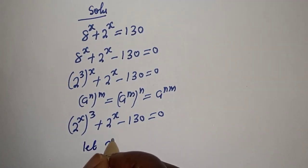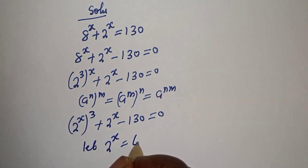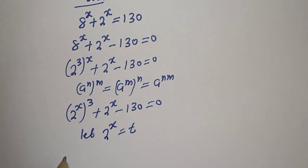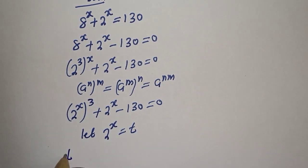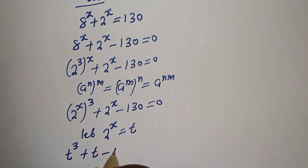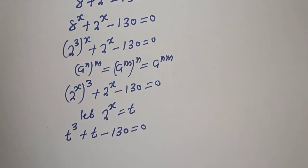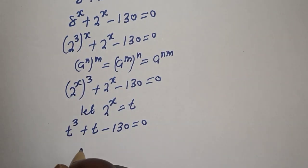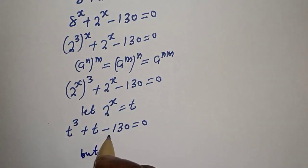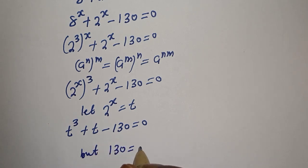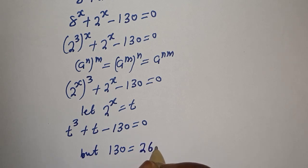Let 2 raised to power s equal t. Then t raised to power t plus t minus 130 is equal to 0. Now, 130 is equal to 26 multiplied by 5.